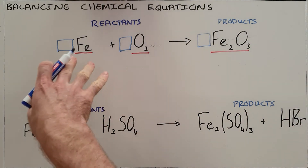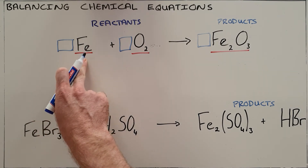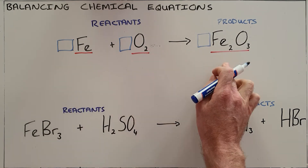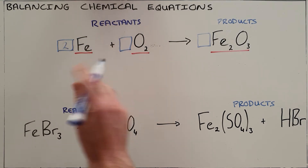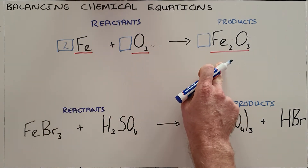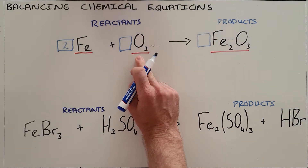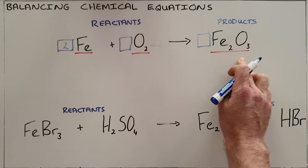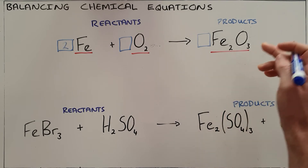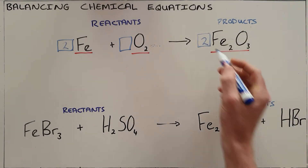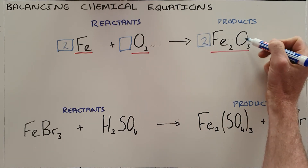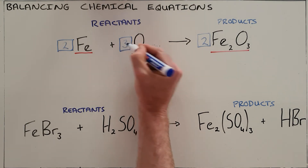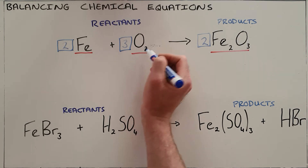We start by looking at the reactants: here we have one iron atom, and in the product we have two iron atoms. The only way we can balance that is by putting a 2 in front of this compound. What that then means is that there are 2 times 3, which is 6 oxygen atoms, and we balance that by putting a 3 in front of this oxygen — 3 times 2 is 6 oxygen atoms.